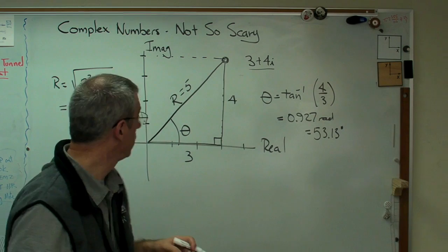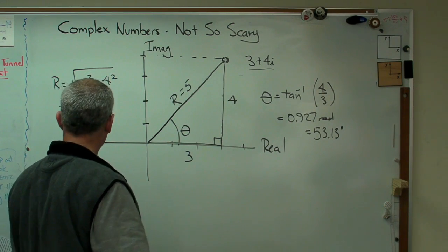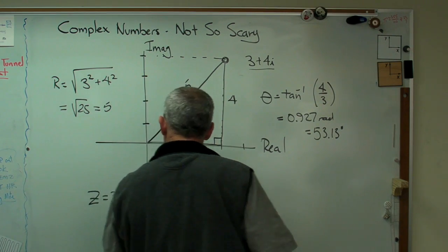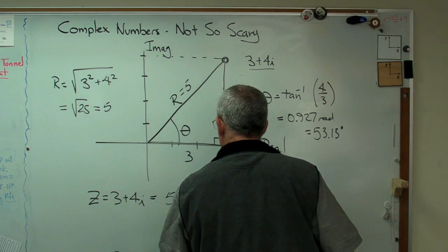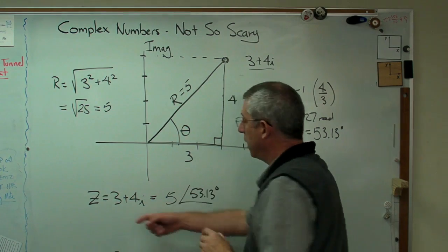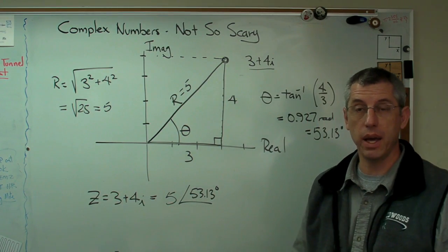So, I can also, if I wrote out z originally as 3 plus 4i, I can also write it out as 5 and 53.13 degrees. These two mean the same thing. And there's one more piece to the puzzle here I want to tell you about.